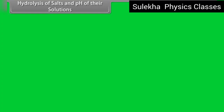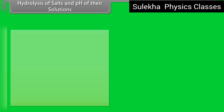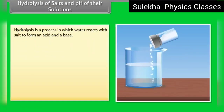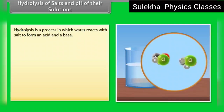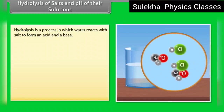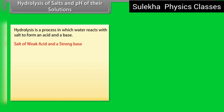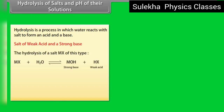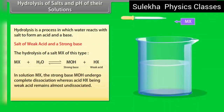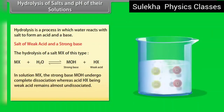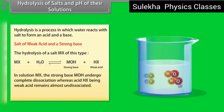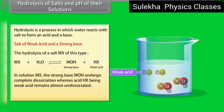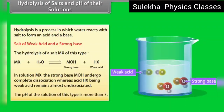Hydrolysis of salts and pH of their solutions: hydrolysis is a process in which water reacts with a salt to form an acid and a base. For a salt of a weak acid and a strong base, the strong base MOH undergoes complete dissociation, whereas the weak acid HX remains almost undissociated. The pH of such a solution is more than 7.